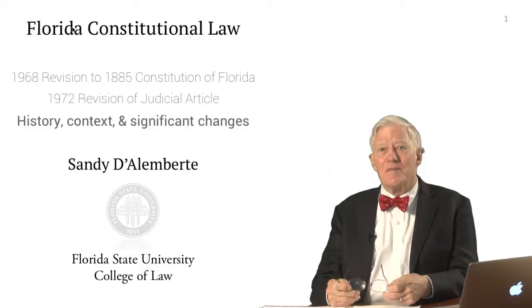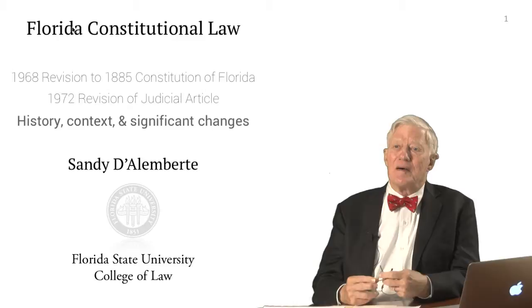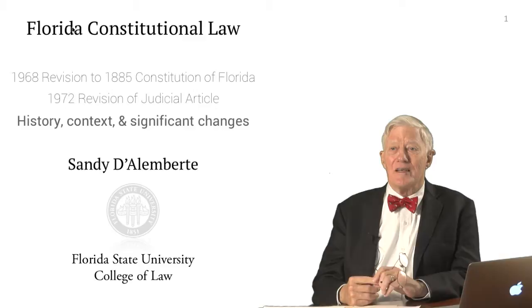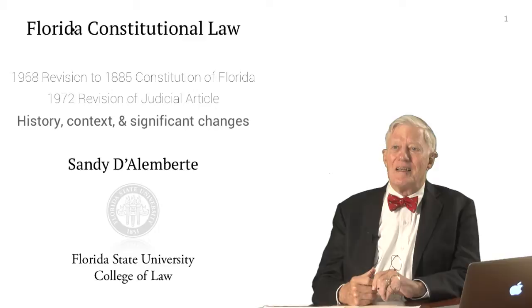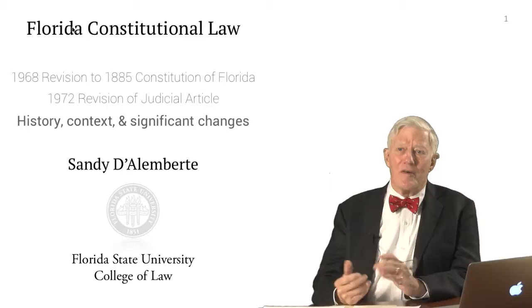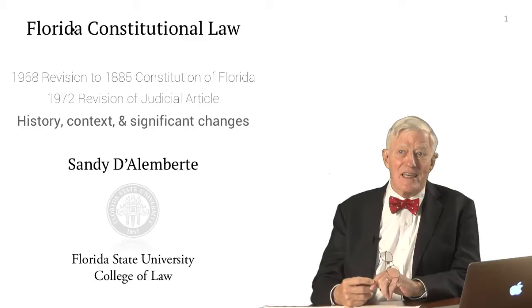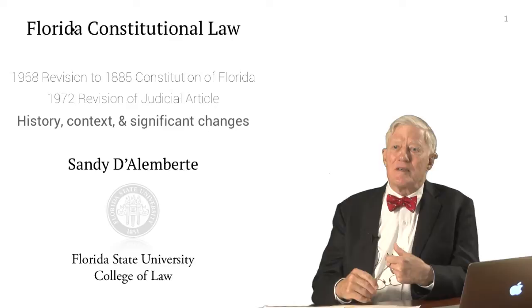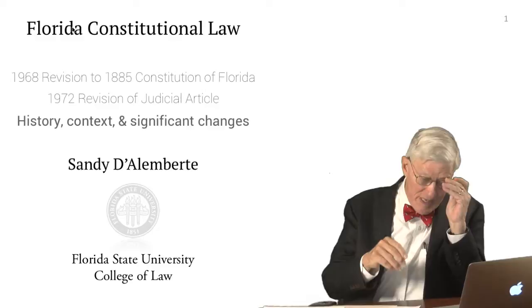We're going to begin looking at Constitution revision in 1968 and look at the attempts to revise the judicial article, which occurred in 1970 — a failed attempt — and the successful attempt in 1972, which was a revision of the basic judicial article, and then amendments adopted in 1976, which further amended the judicial article in respects that will be very important to you as practicing lawyers.